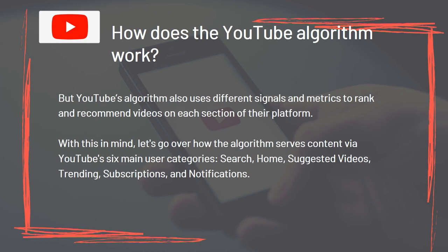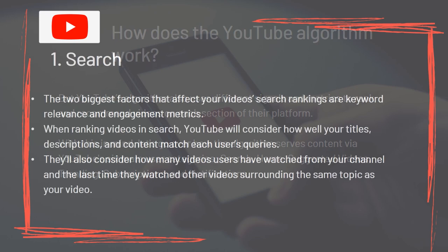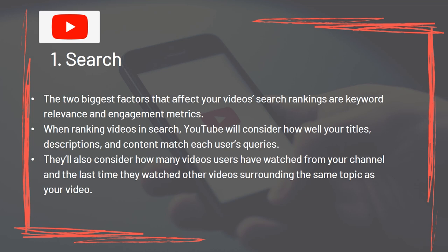Let's go over how the algorithm serves content via YouTube's six main user categories. For Search, the two biggest factors that affect your video search rankings are keyword relevance and engagement metrics. When ranking videos in search, YouTube will consider how well your titles, descriptions, and content match each user's queries. They'll also consider how many videos users have watched from your channel and the last time they watched other videos surrounding the same topic as your video.